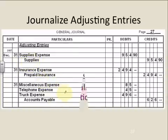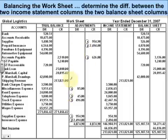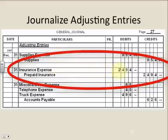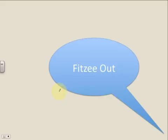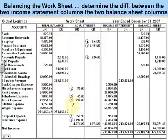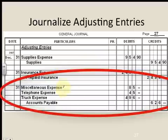Let's look at our insurance expense from the worksheet — it was number two. So I'm looking for number two: insurance expense is my debit and prepaid insurance is my credit. So I debit insurance expense and credit prepaid insurance. And finally, number three has lots — there are three number threes as debits: miscellaneous expense for $85, telephone expense for $45, truck expense for $496, and accounts payable as my credit. So when you put it all together, there are my three debits and accounts payable as a credit.